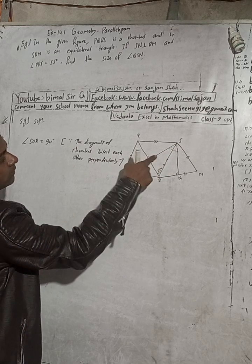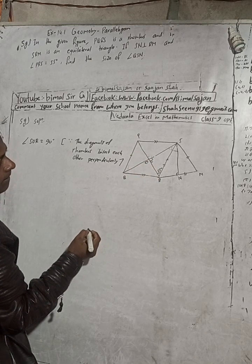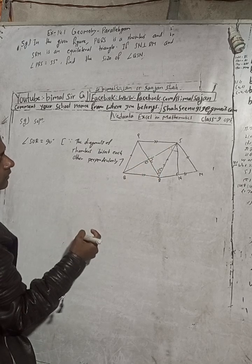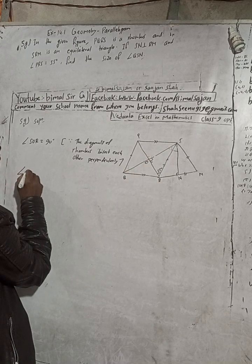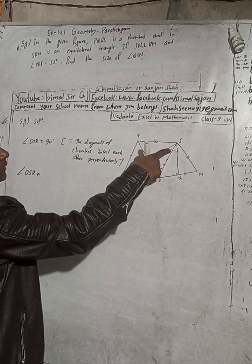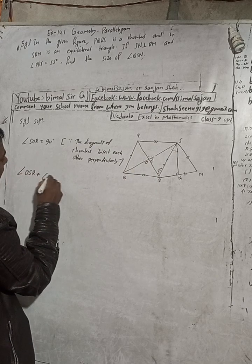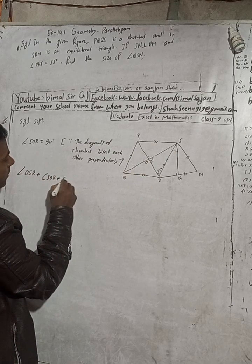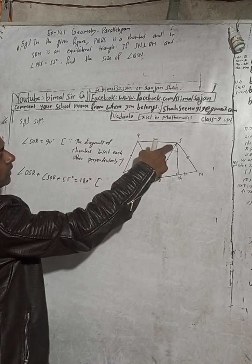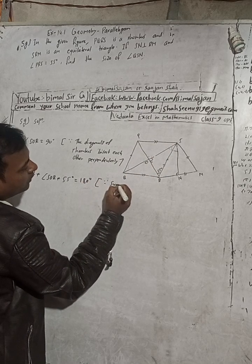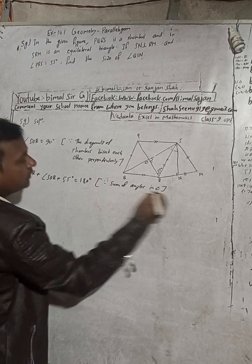Now we know this angle. So angle OSR plus 55 degrees is equal to 180 degrees. Why? Because the sum of angles in a triangle is equal to 180 degrees.